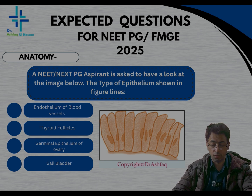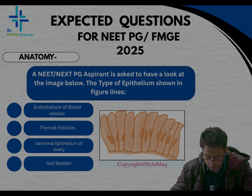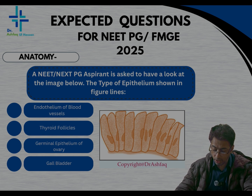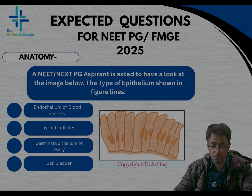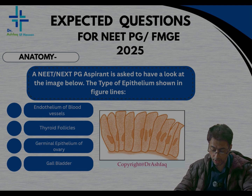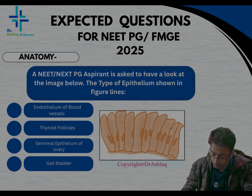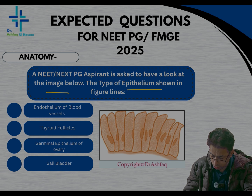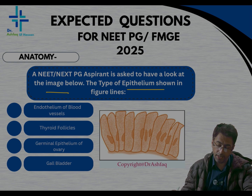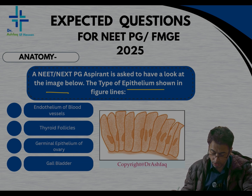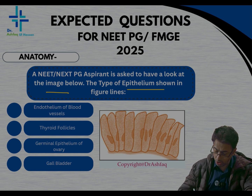These are a new set of questions and this is what we will be expecting in future examinations as well. The first question is from anatomy, specifically from the branch of histology. A NEET PG aspirant is asked to have a look at the image below and identify the type of epithelium, and then identify where this type of epithelium is present — that is the crux of the question.